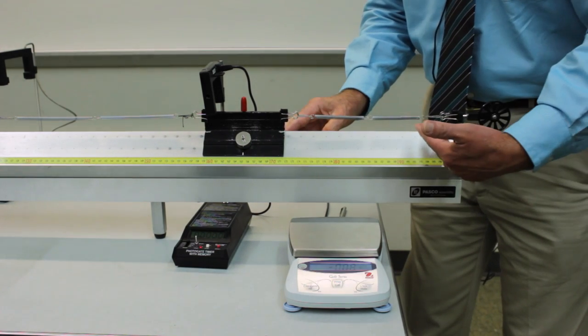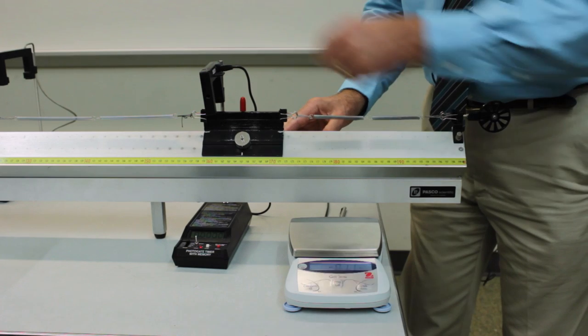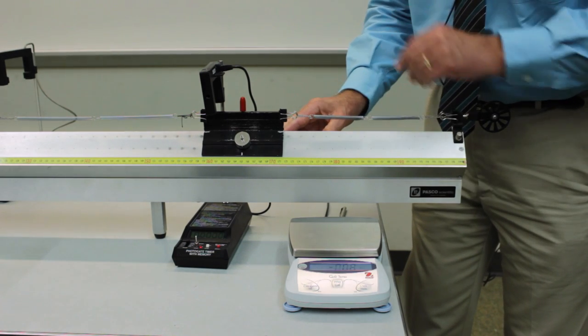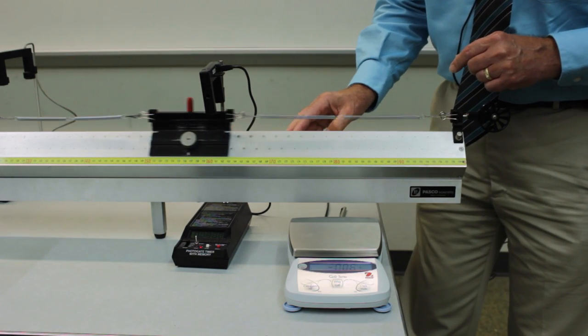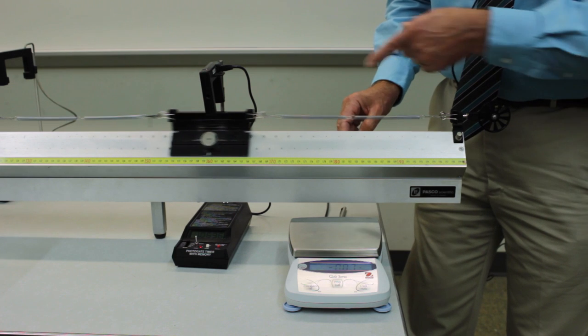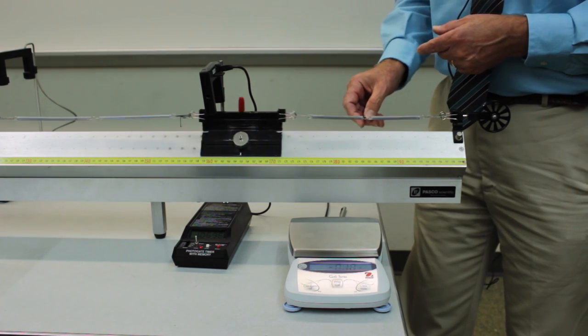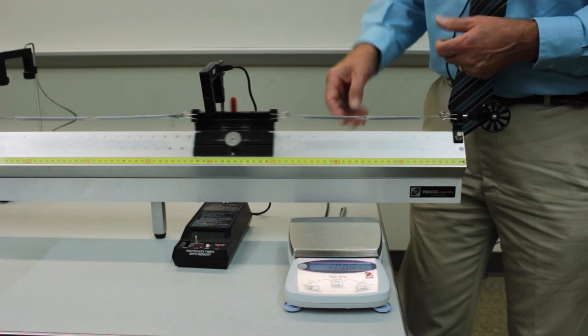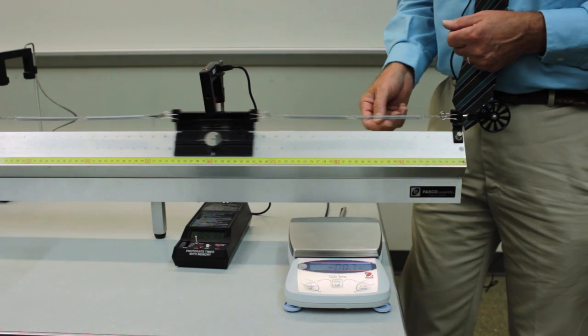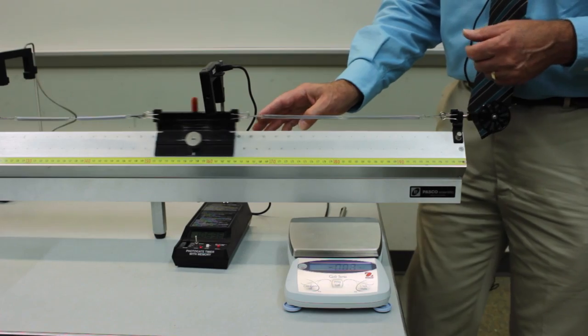You don't have to re-measure the spring constant. That depends only on the configuration of the spring. So leave that as it is. Change the amount of mass. And we'll notice now that the period is increased significantly with the amount of mass added to the system. So repeat the measurements with an increased amount of mass.